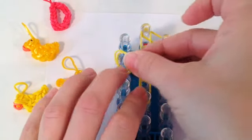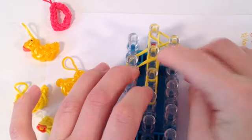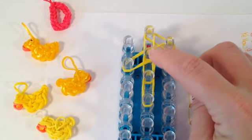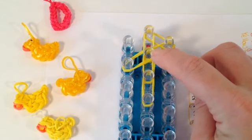We're going to take two bands from the left to the center. This is going to be your neck area, the center peg, the second peg down. That'll be our neck area.